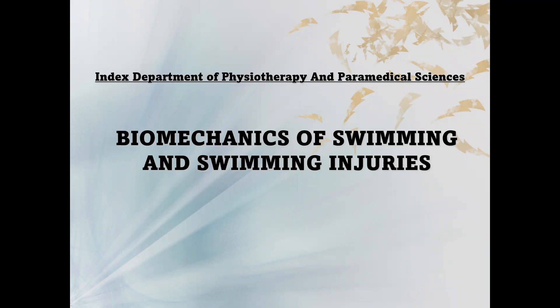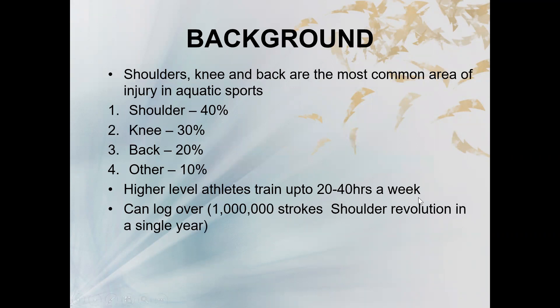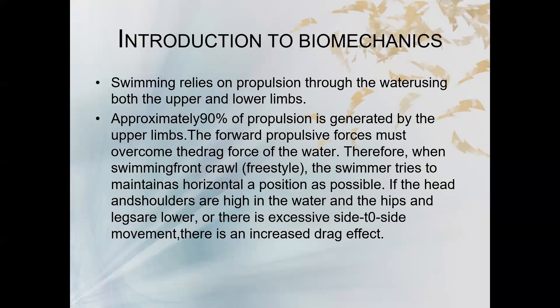Welcome students. Today we will be discussing the biomechanics of swimming and swimming injuries. The background: shoulder, knee, and back are the most common areas of injury in aquatic sports — shoulder 40%, knee 30%, and back 20%. Higher level athletes train up to 20 to 40 hours a week and can log over one lakh shoulder revolutions in a single year.